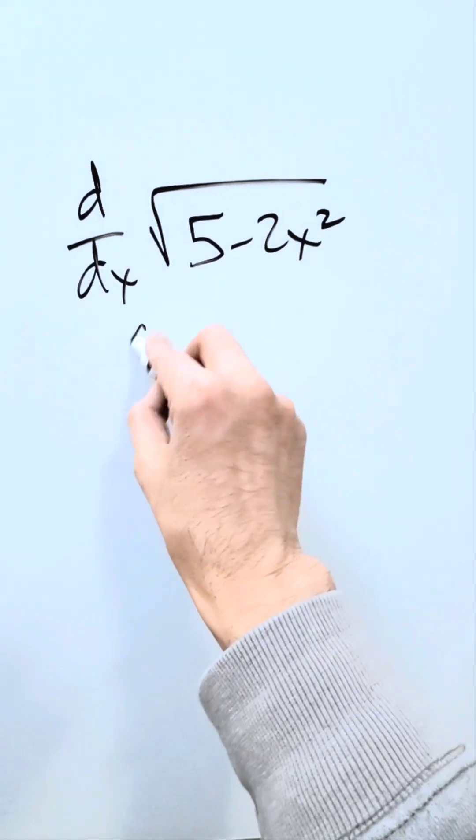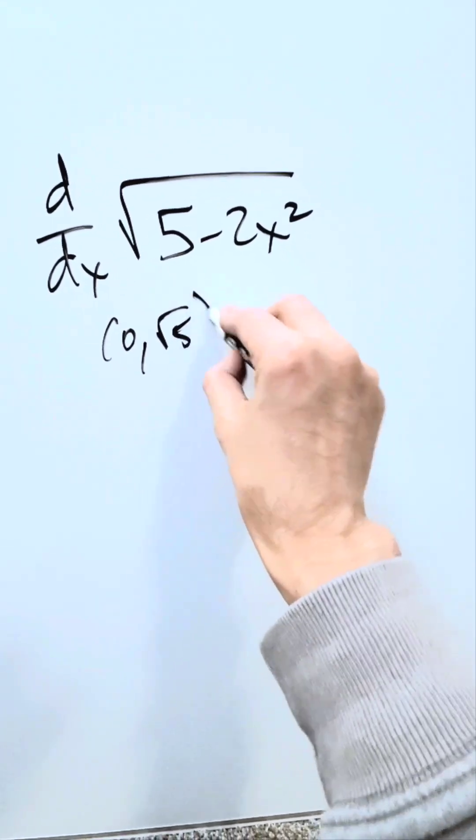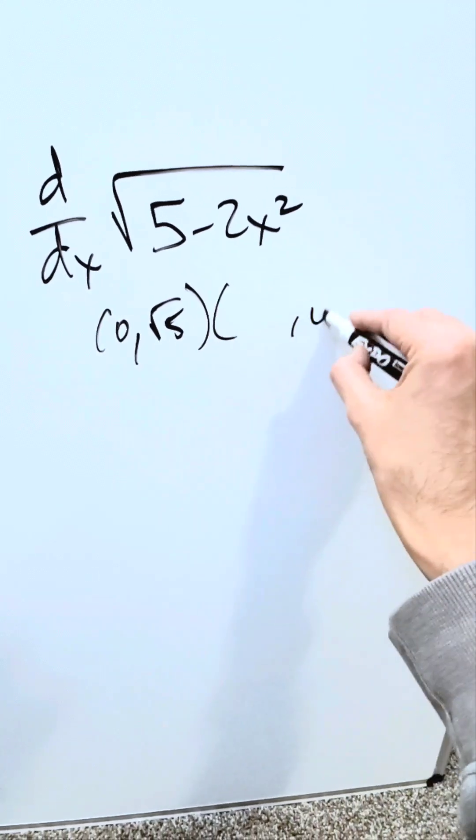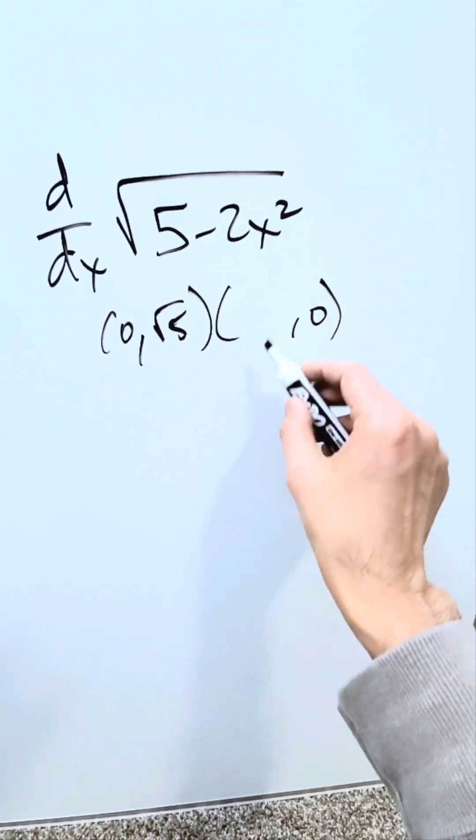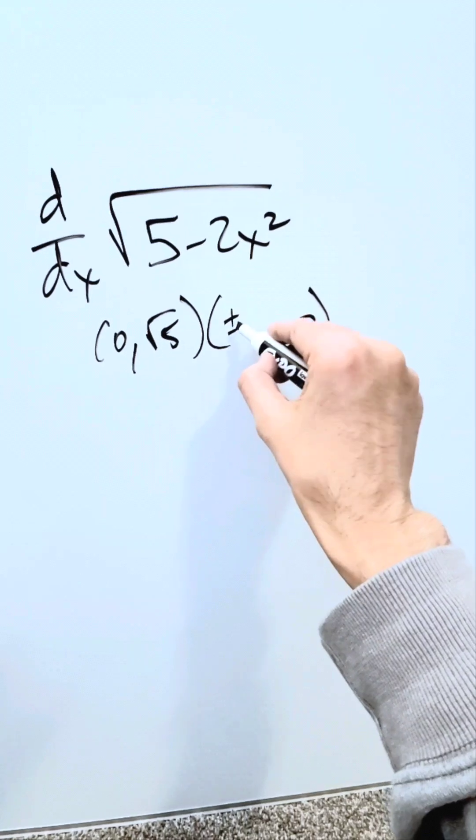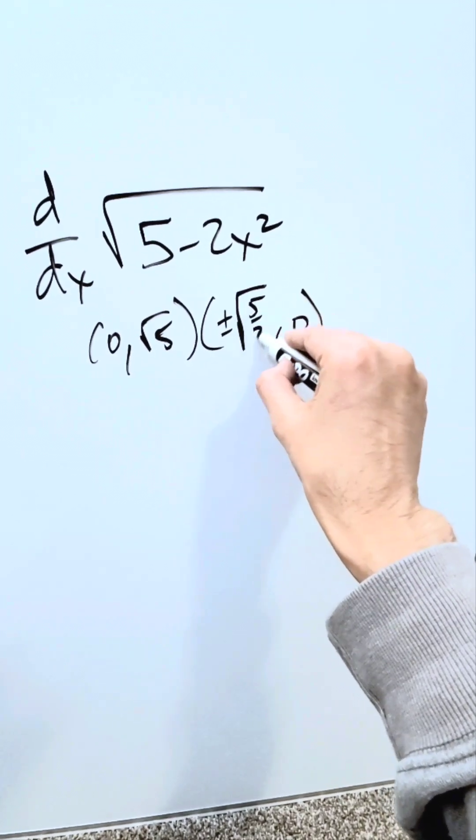If I make the x value 0, I can solve for the y value. It will be root 5, and this is the y-intercept. If I make y equal to 0 and solve for x, I'll algebraically get plus and minus square root of 5 over 2.